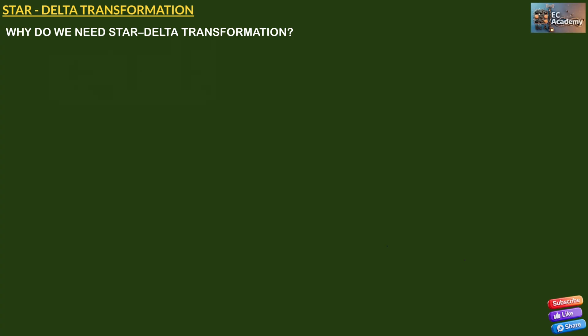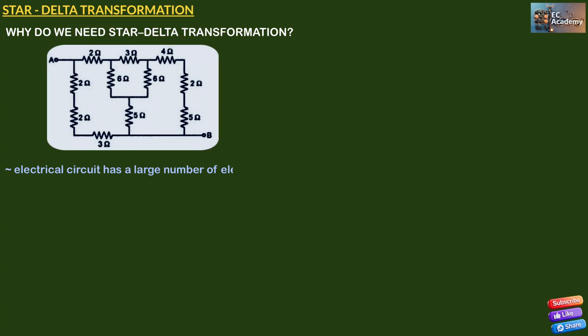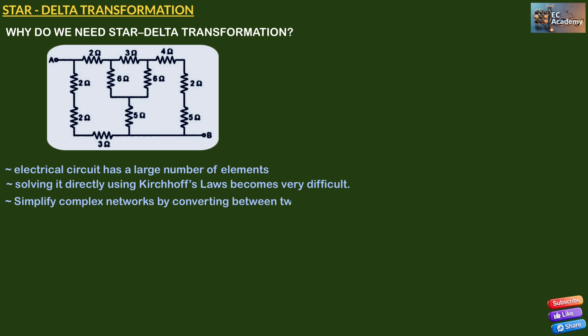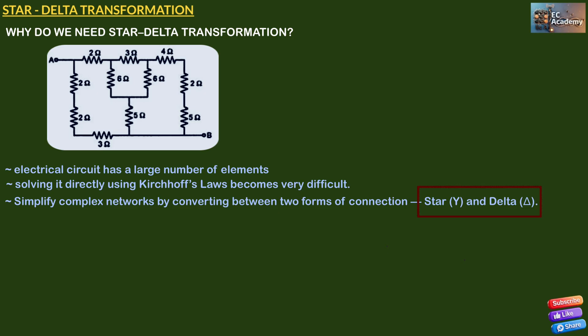Why do we need star delta transformation? When an electrical circuit has a large number of elements, solving it directly using Kirchhoff's law becomes very difficult. You need to write simultaneous equations and solve those equations, which will become very complex. We can simplify this complex network by converting between two forms of connections: star and delta.